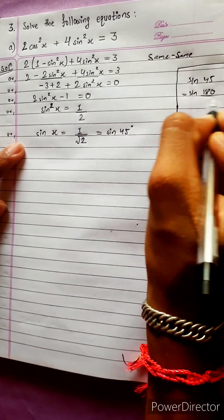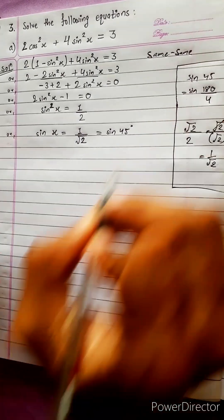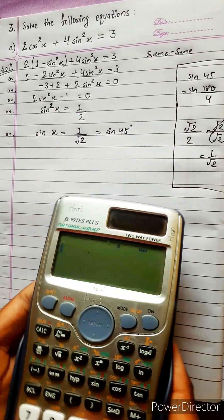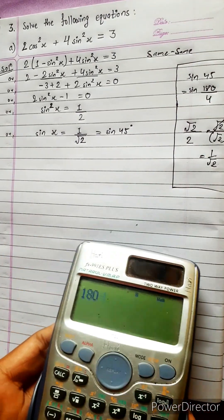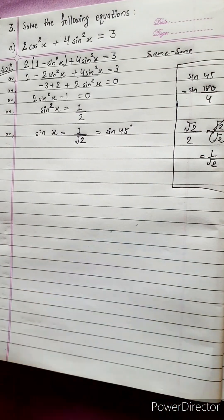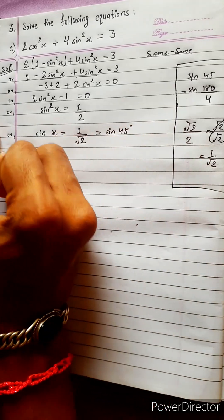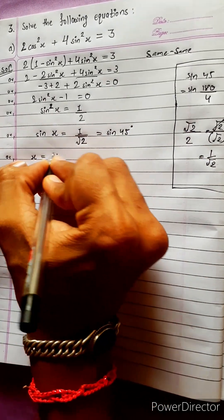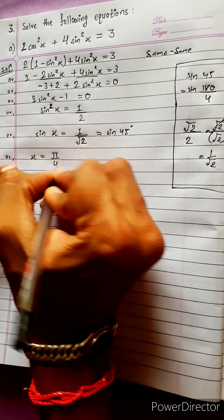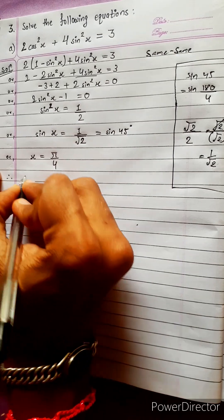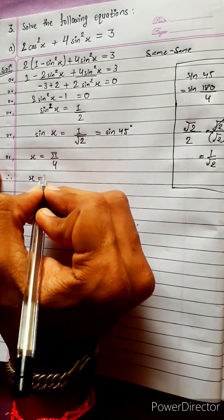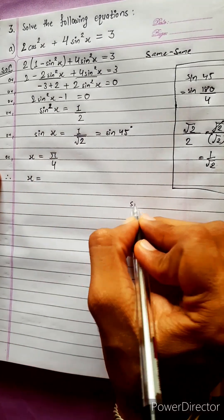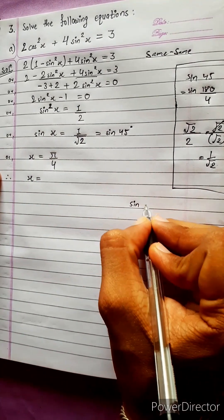sin 180/4, that is sin 45 degrees, so x equals pi by 4. Therefore x equals pi by 4.